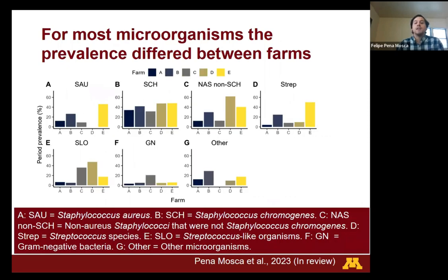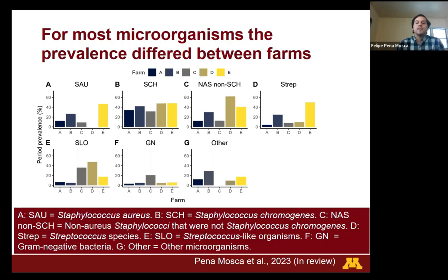However, the prevalence of microorganisms, even those well adapted to the mammary gland, was different across different dairy farms. For example, in panel A we can see a Staphylococcus case in which almost half of the cows on farm E had an infection during the follow-up period, but none of the cows had an infection caused by Staphylococcus in farm D during the follow-up period. A similar pattern was evidenced for other microorganisms, suggesting there are other unmeasured factors leading to those differences between farms.